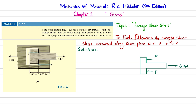We will find this force using the equation of equilibrium: the sum of all forces along the x-direction must equal zero, with force in this direction taken as positive. So: 6 − F − F = 0, giving 6 = 2F, and therefore F = 6/2 = 3 kilonewtons.